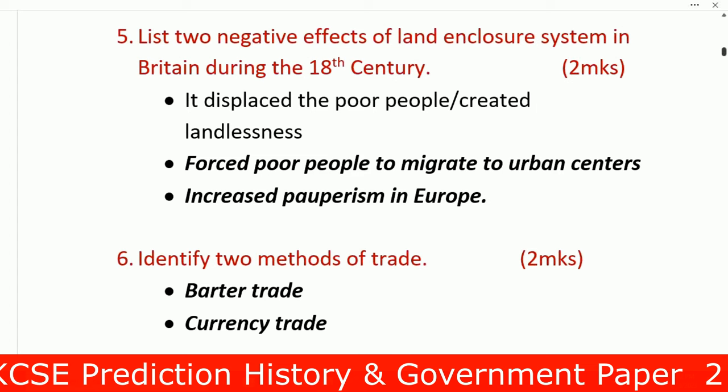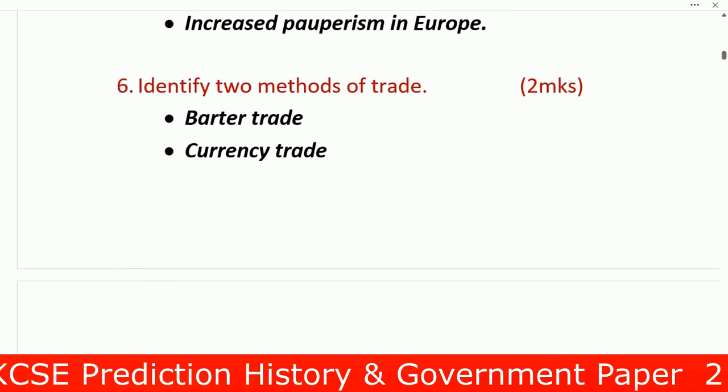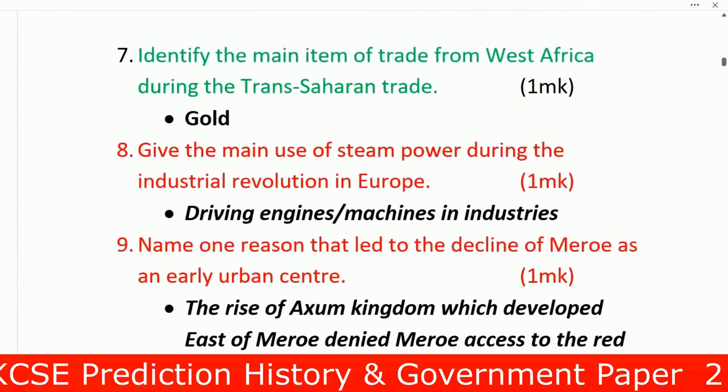The enclosure system displaced poor people, creating landlessness. Number two: it forced poor people to migrate to urban centers. Number three: it increased poverty in Europe. Question 6: Identify two methods of trade — barter trade and currency trade. Question 7: Identify the main item of trade from West Africa during the Trans-Saharan trade — that was gold. Question 8: The main use of steam power during the Industrial Revolution in Europe was driving engines and driving machines in industries.